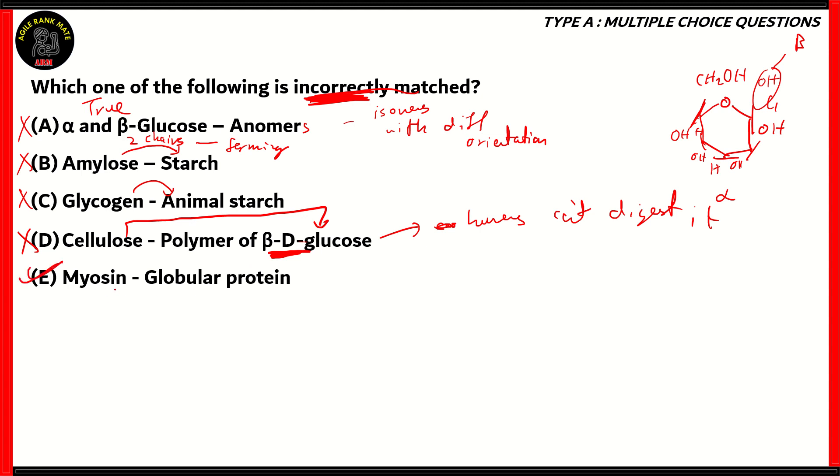So that makes option E the right answer, but let's look at why. Is it an incorrect match? Myosin is a muscle protein, which is constructed in long chains. However, in this particular match, it's set as a globular protein, which looks something like this, whereas myosin looks more like a chain. So therefore, option E is correct, because myosin is not a globular protein. It's more of a linear protein. So therefore, option E is the right option, because the option is incorrectly matched.